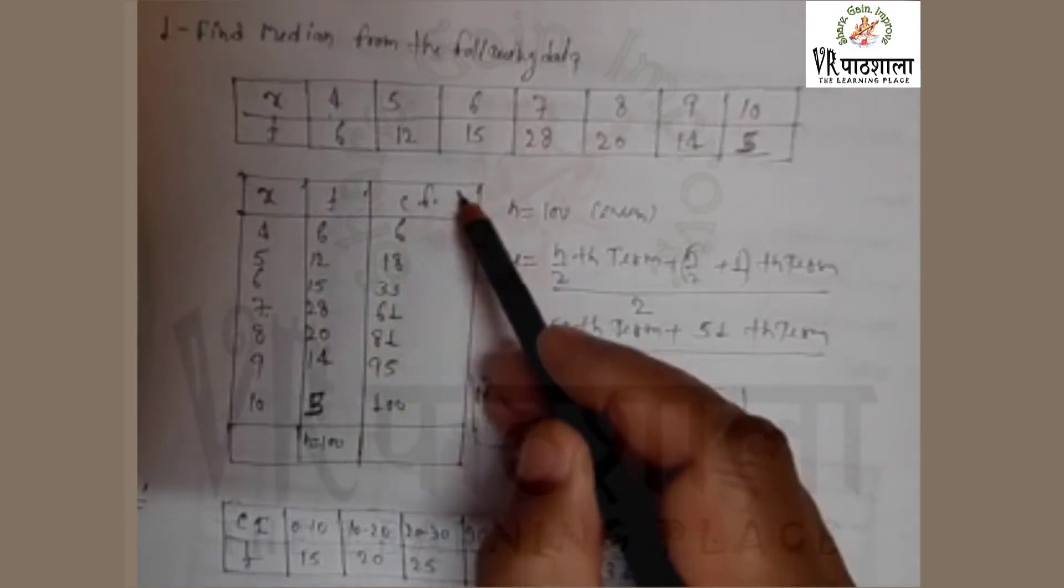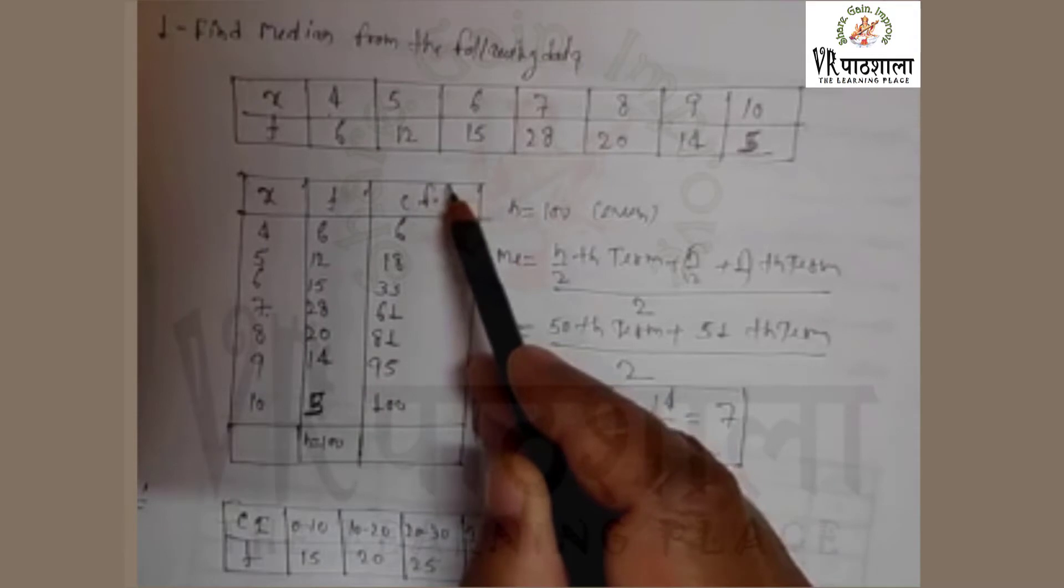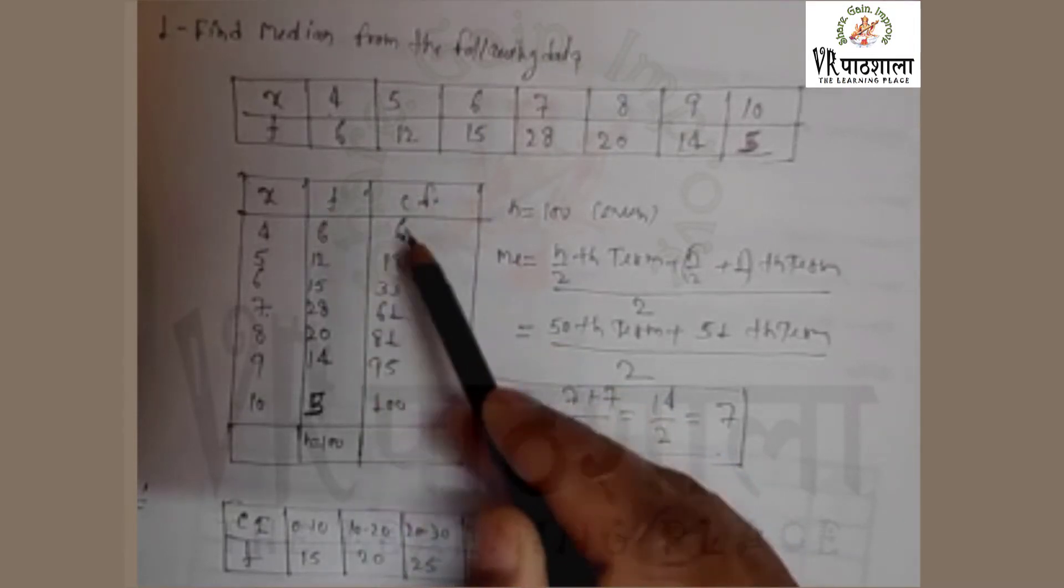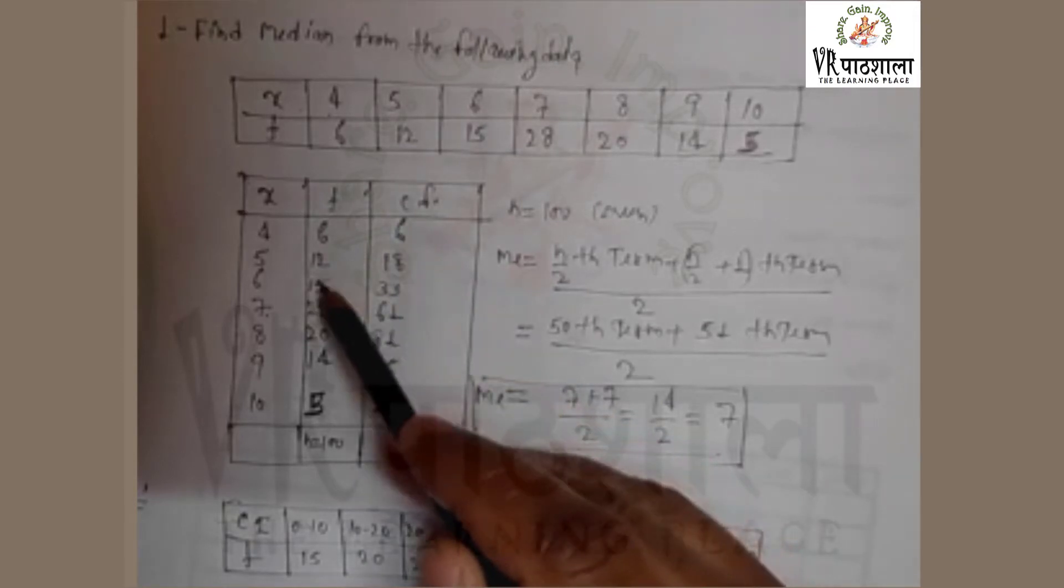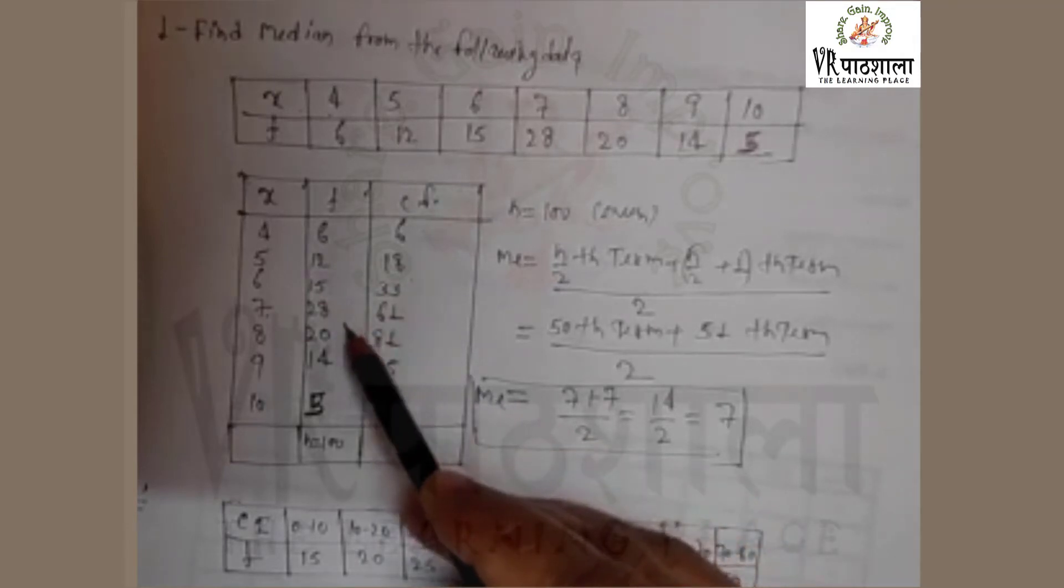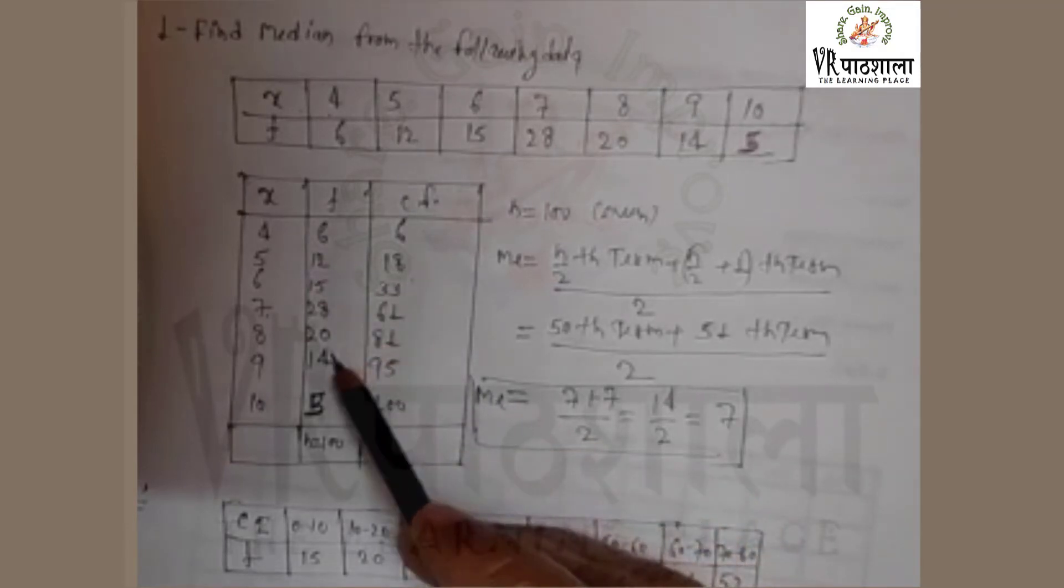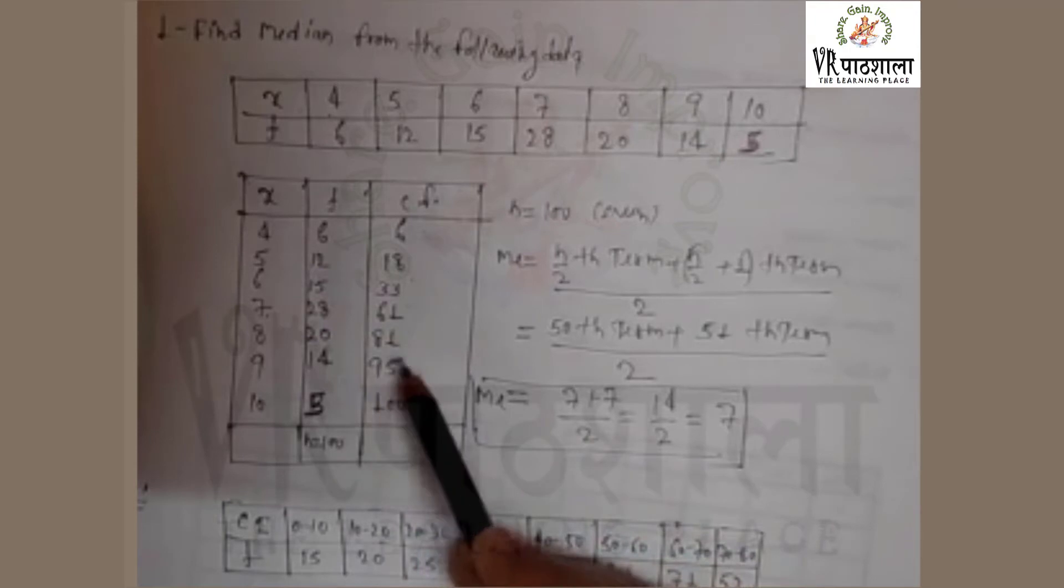In median, we need cumulative frequency. How to calculate the cumulative frequency? The first term of cf is the first term of frequency. The next term of cf is 6 plus 12 is 18, 18 plus 15 is 33, 33 plus 28 is 61, 61 plus 20 is 81, 81 plus 14 is 95, and 95 plus 5 that is 100.